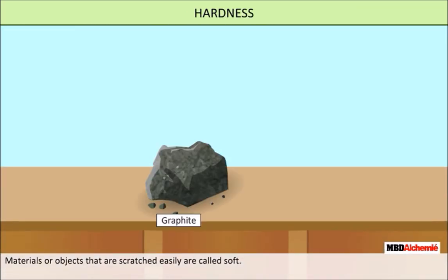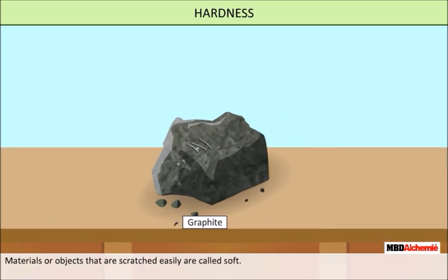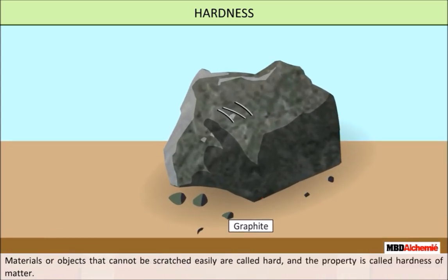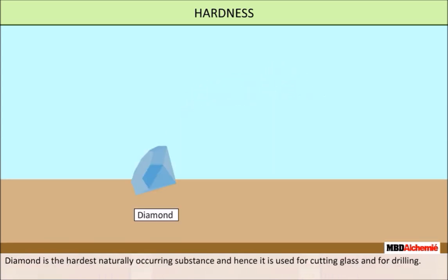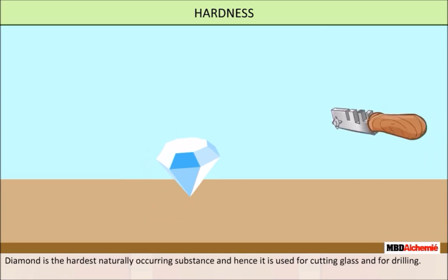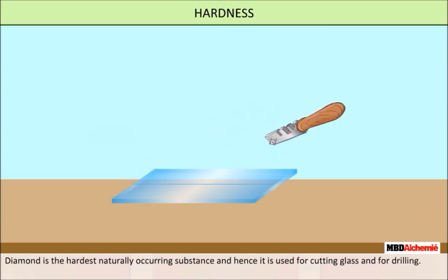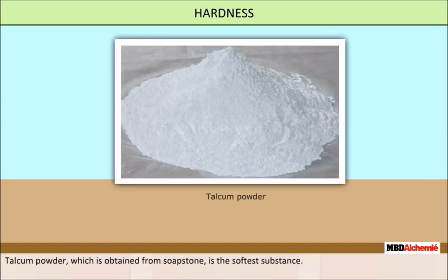Hardness. Materials or objects that can be scratched easily are soft. For example, graphite is a soft material and can be scratched easily. Materials or objects that cannot be scratched easily are hard. For example, diamond is the hardest naturally occurring substance and hence is used for cutting glass. Talcum powder, which is obtained from soapstone, is the softest substance.